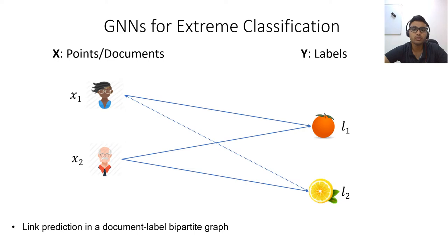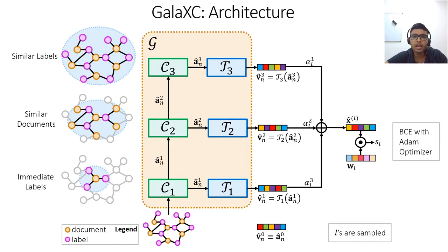Galaxy tries to rectify these issues. At a very high level, Galaxy has two components. First, a lightweight GNN architecture that effectively utilizes multi-hop neighbourhoods at extreme scales to offer multi-resolution embeddings for documents. Second, high-capacity extreme classifiers and a label-wise attention mechanism over the multi-resolution embeddings. I will now describe each of the two components in detail.